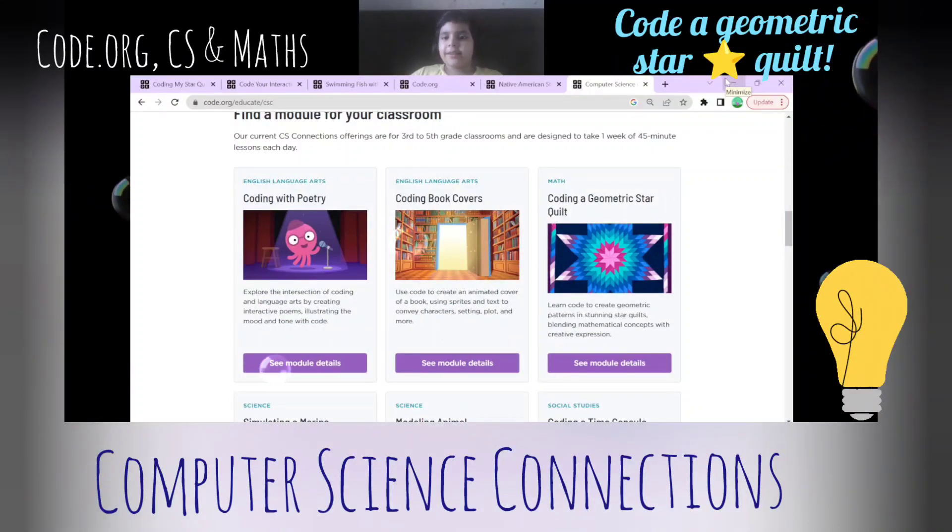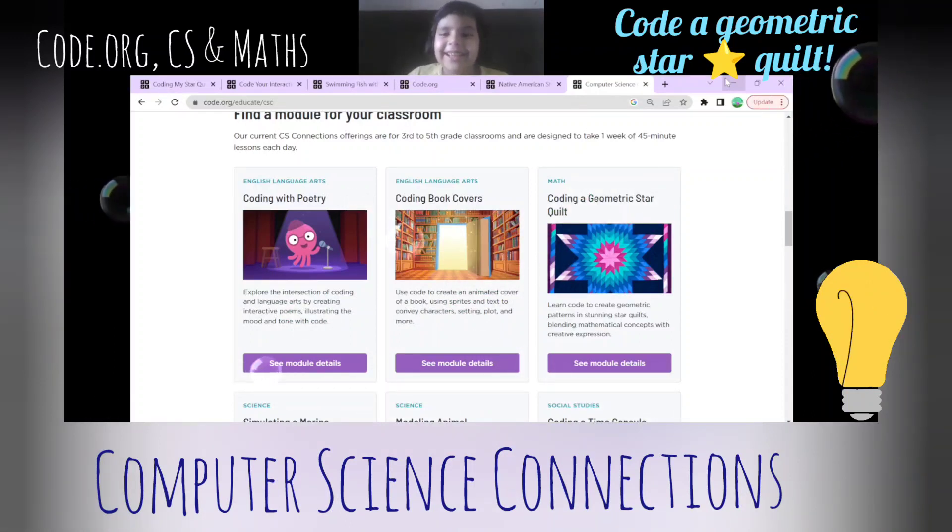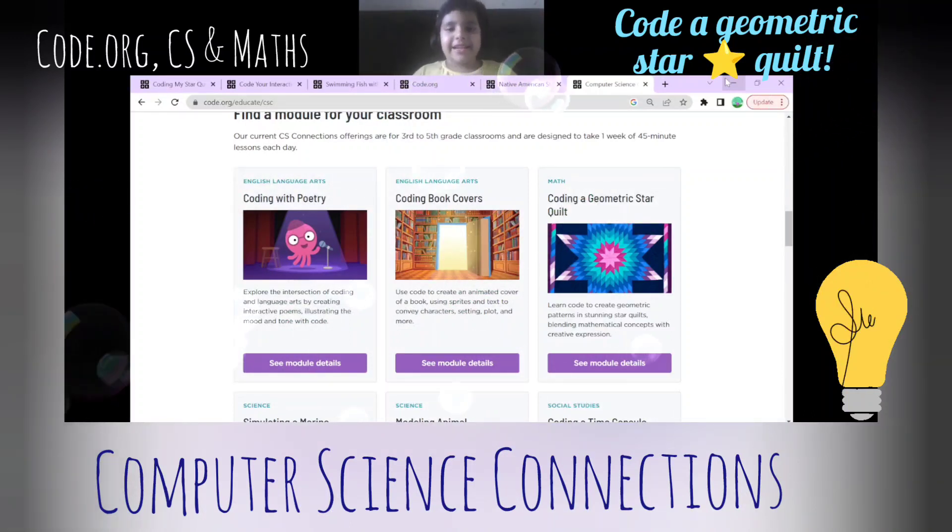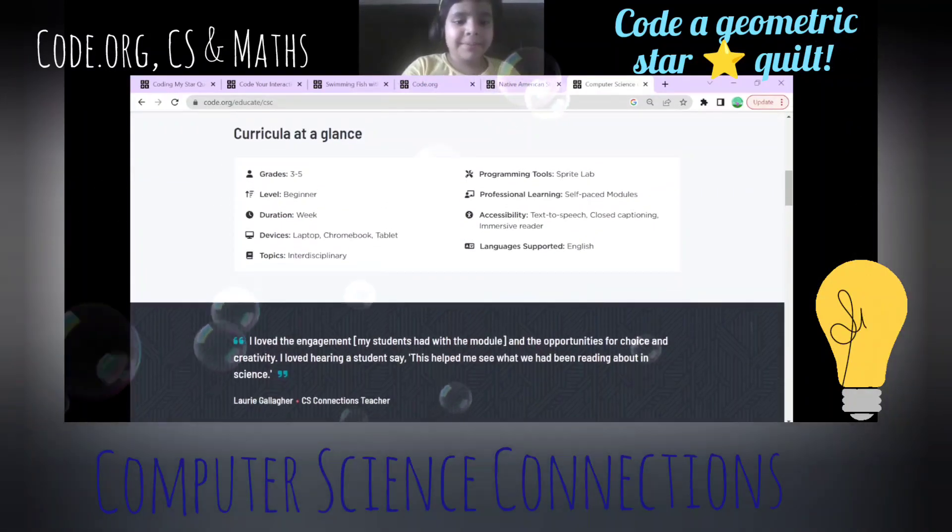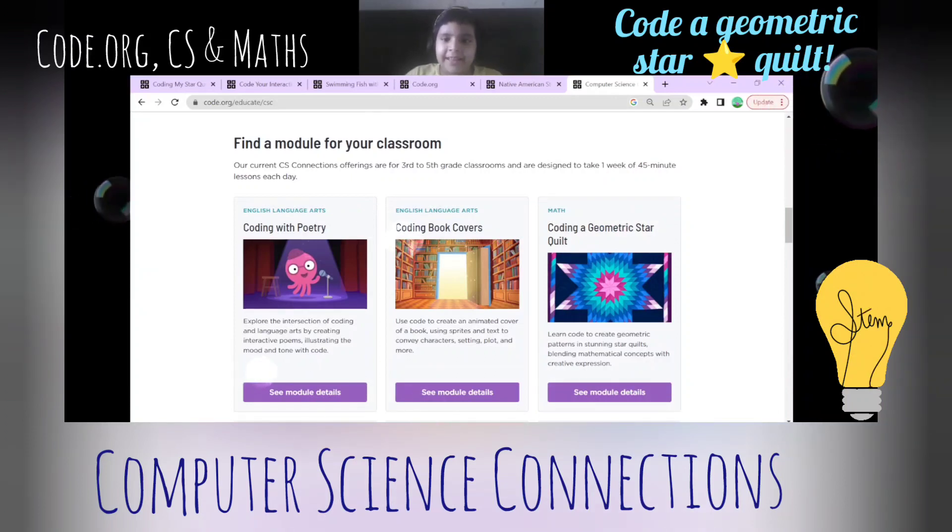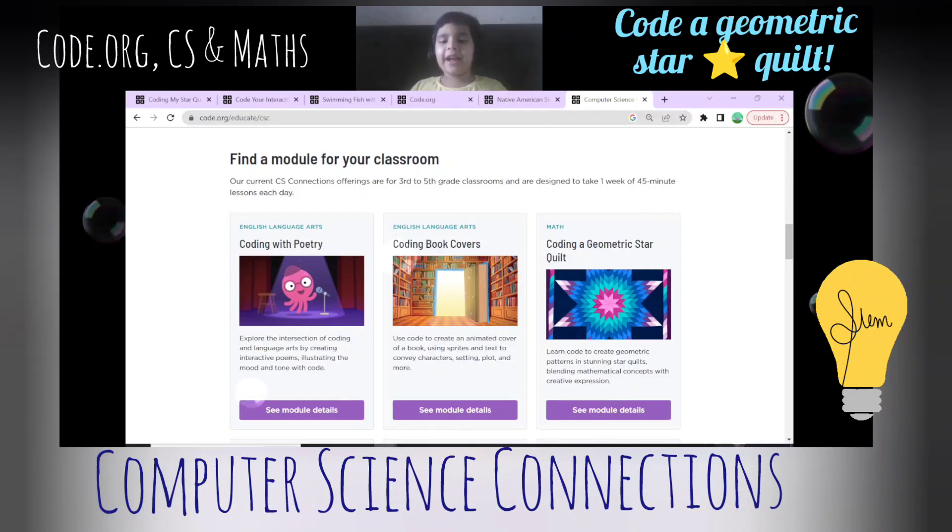Hi everyone, welcome to my channel. Today can you guess what we're doing? Yes, we're coding our geometric star quilt. In Computer Science Connections, two subjects, we're going to need to make a geometric star quilt. For the knowledge we need knowledge of computer science and maths.